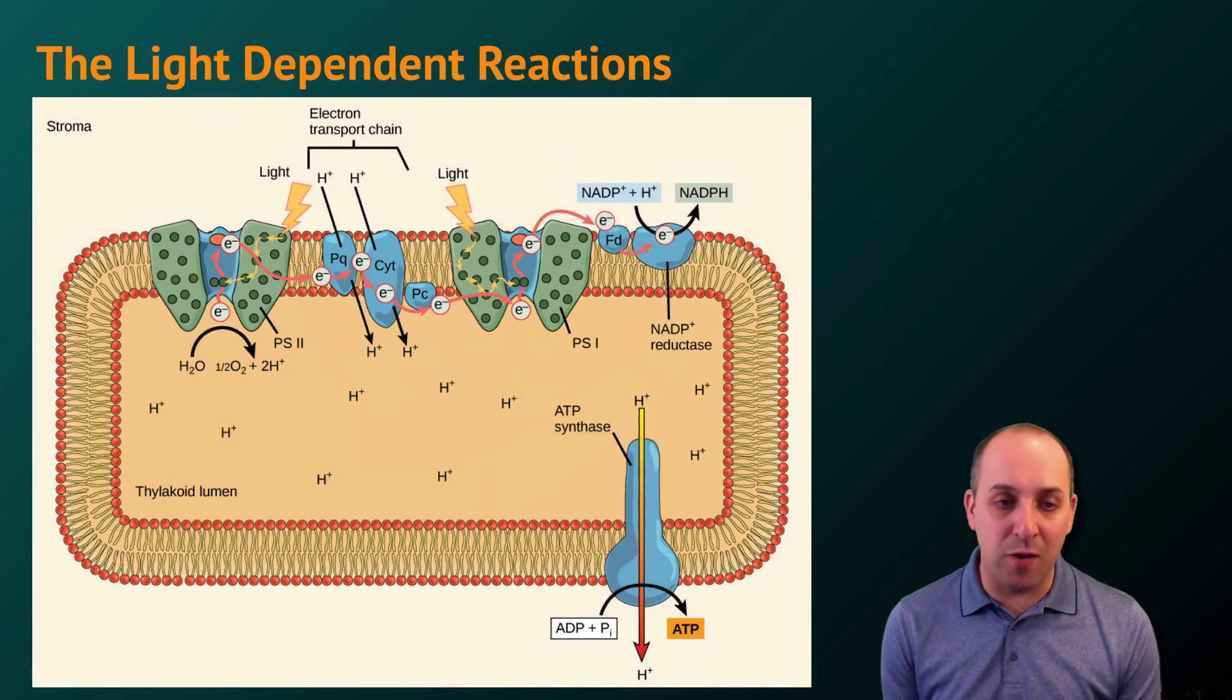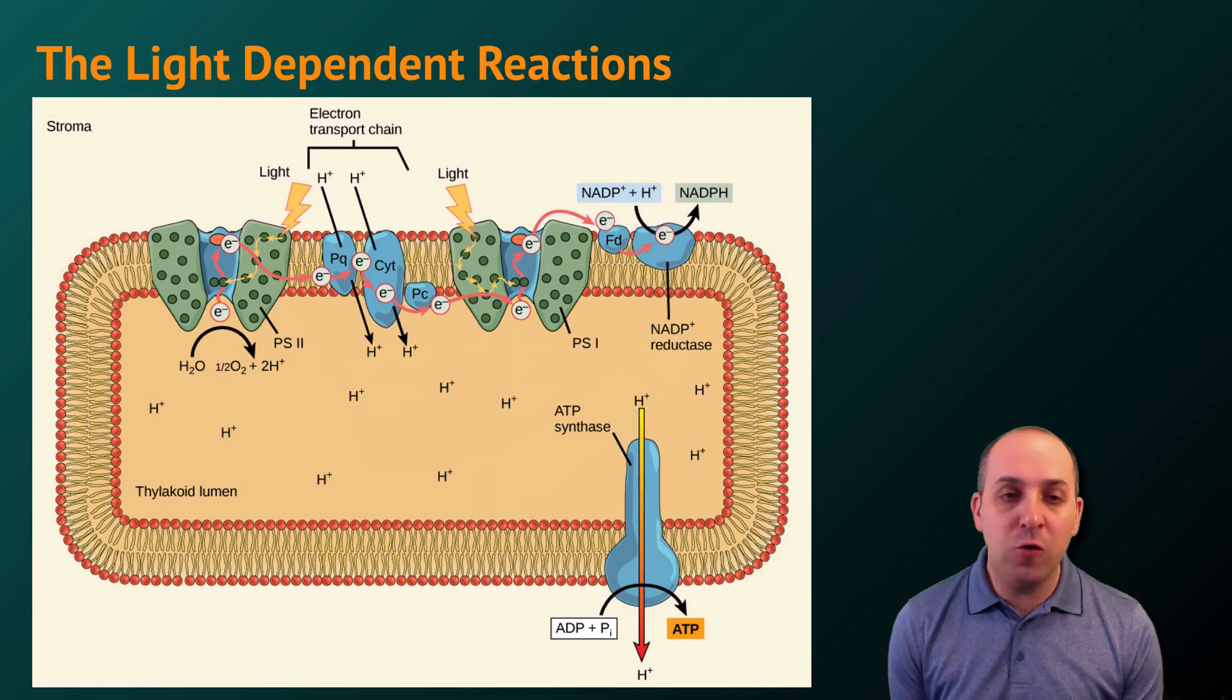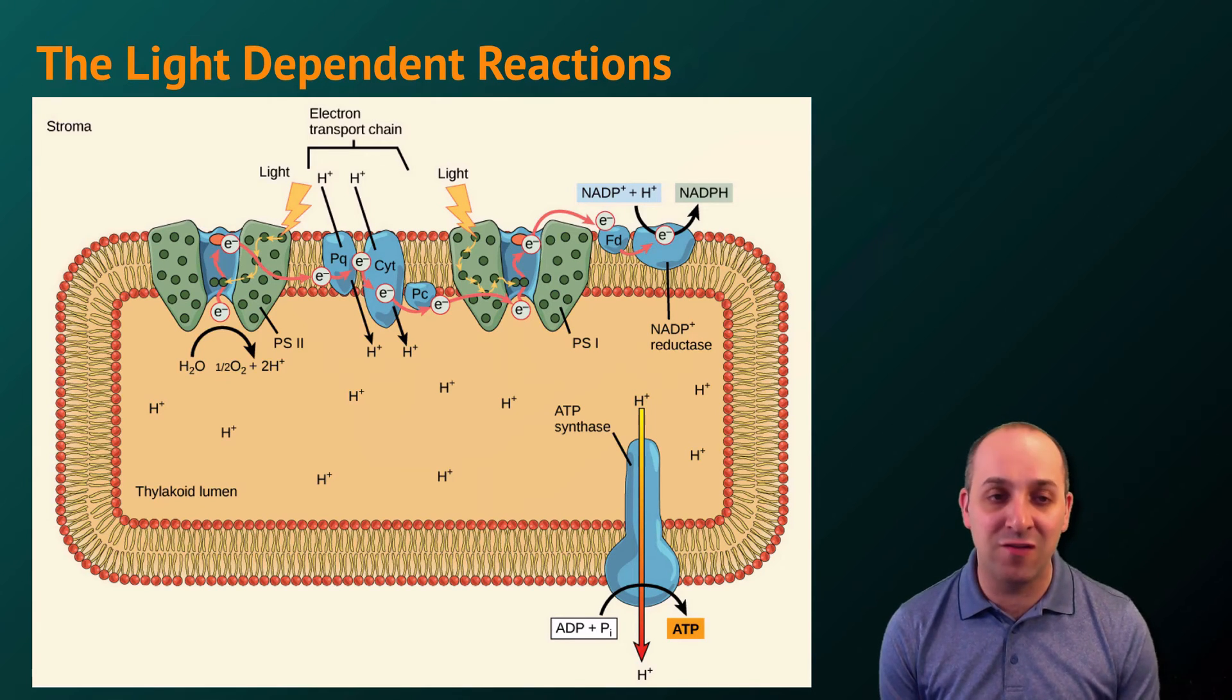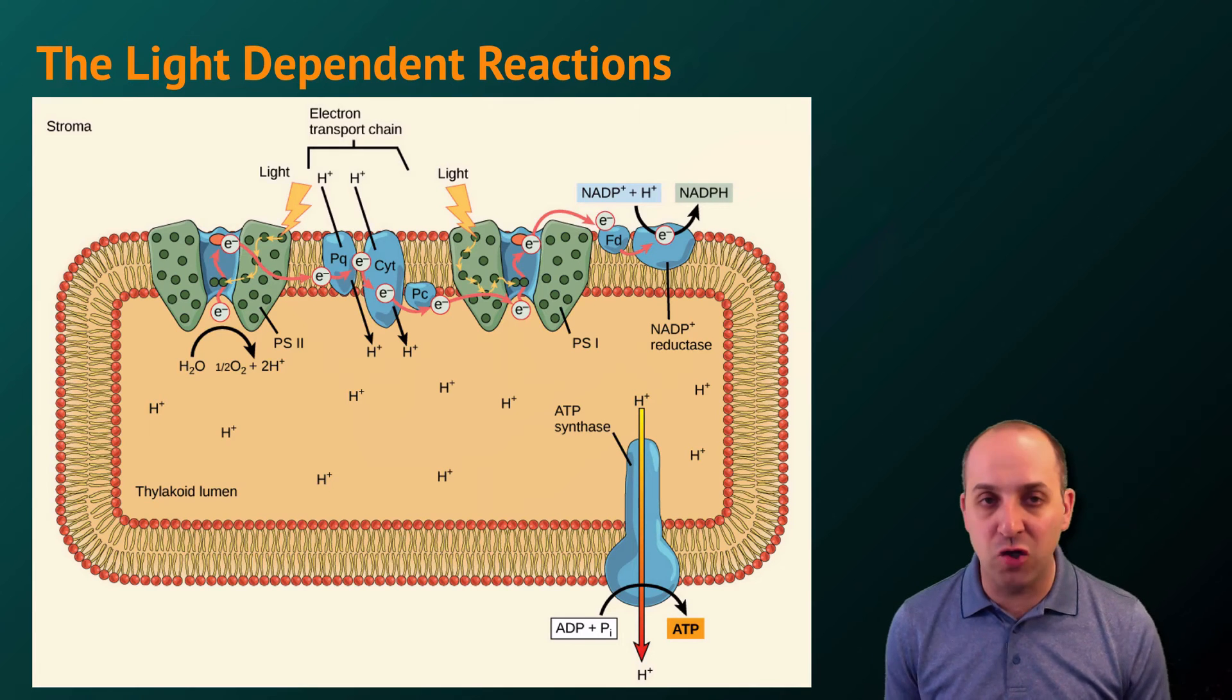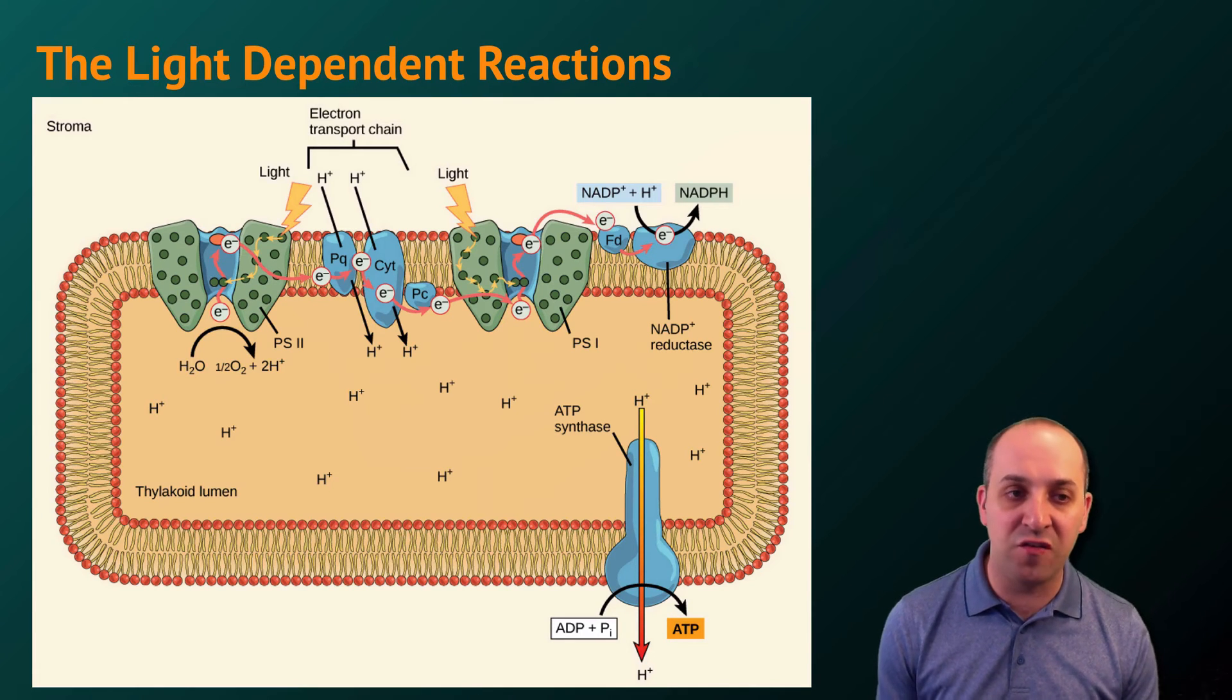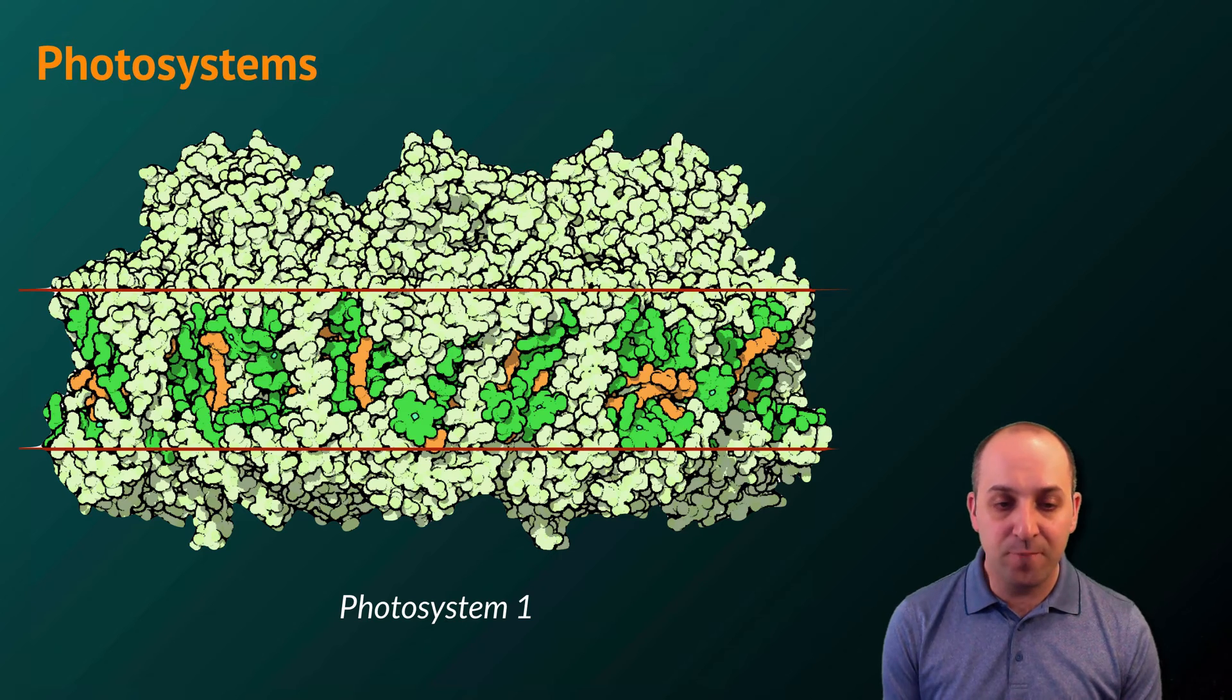Let's take a look at the light-dependent reactions. This image shows us a cartoon version of a thylakoid with the structures that are necessary for the light reactions embedded in the thylakoid membrane. You can probably already see that we're dealing with an electron transport chain, but we also have another structure that we need to pay attention to in photosynthesis, which are the photosystems.